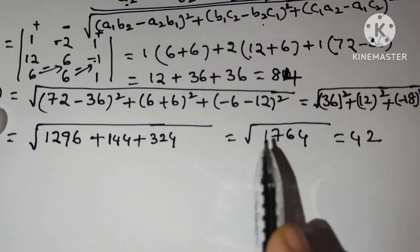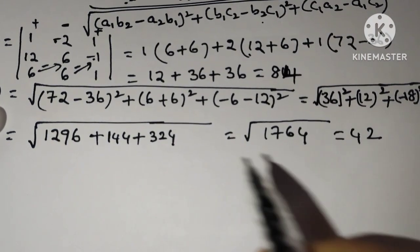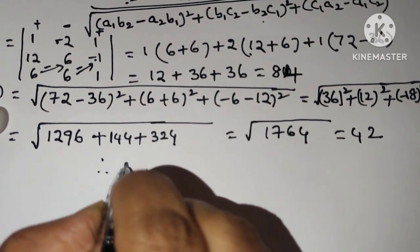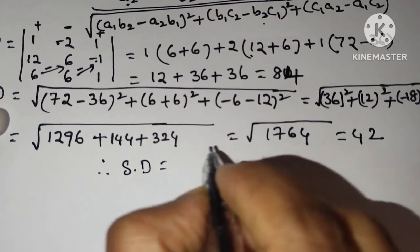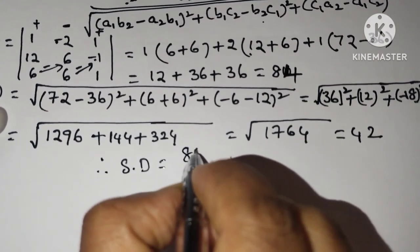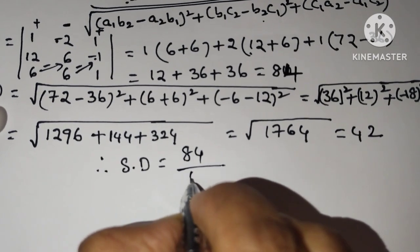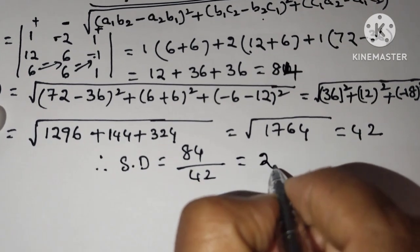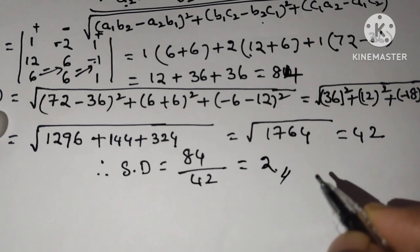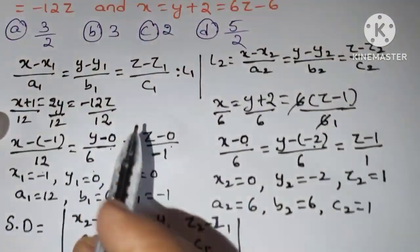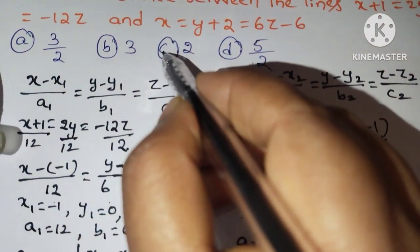Therefore shortest distance equals numerator 84 by denominator 42, that is 2, is the answer. Check the options, option c is the correct.